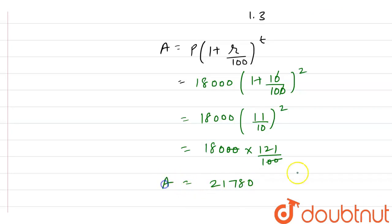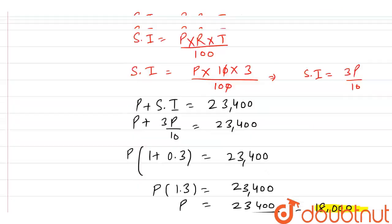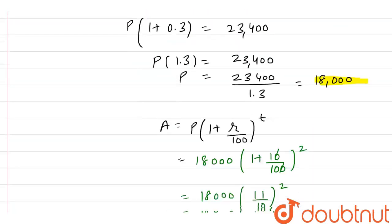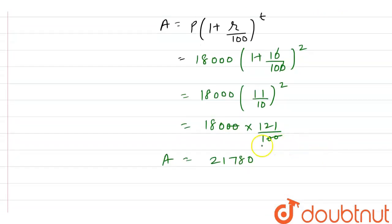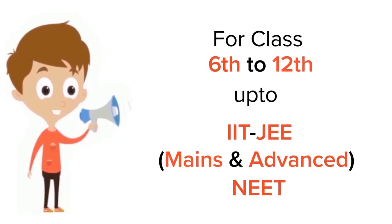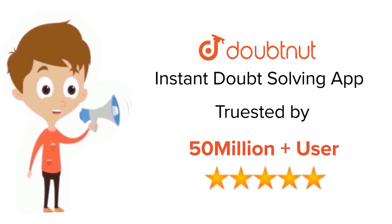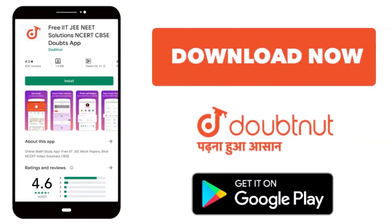Hence the amount of the sum is rupees 21,780, and this is our final answer. Thank you. For class 6–12, IIT JEE and NEET level, trusted by more than 5 crore students — download DoubtNut today.